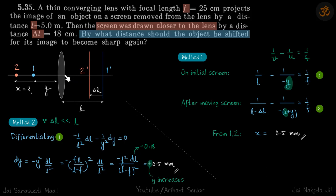And for the final position, the v is l - delta l, and u is -(y + x), minus of x plus y. So we have two equations and two variables, y and x. So we just get rid of y and get our answer, x equal to 0.5 millimeter. The other way of doing it is...